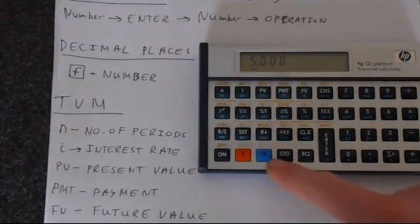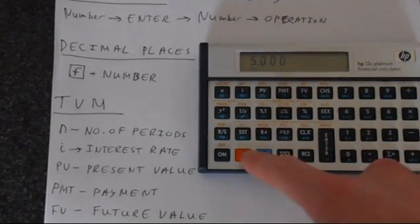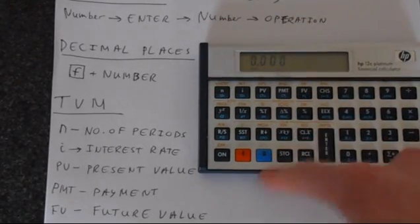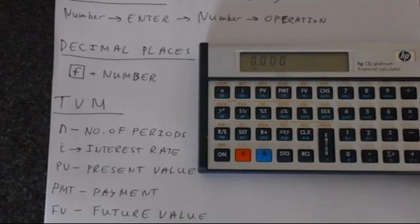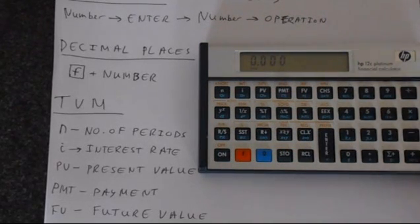It's important to know what these F and G buttons do. Pressing the F button allows you to access all of the orange text. So remember when we're clearing, clear X clears the display, and F clear X gets you the reg function which clears everything. The G button is in blue and that lets you access all of these blue functions written on the bottom of the buttons.